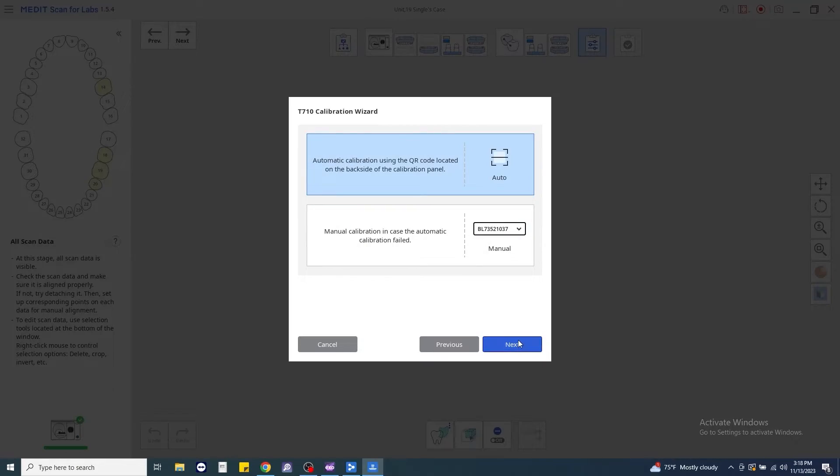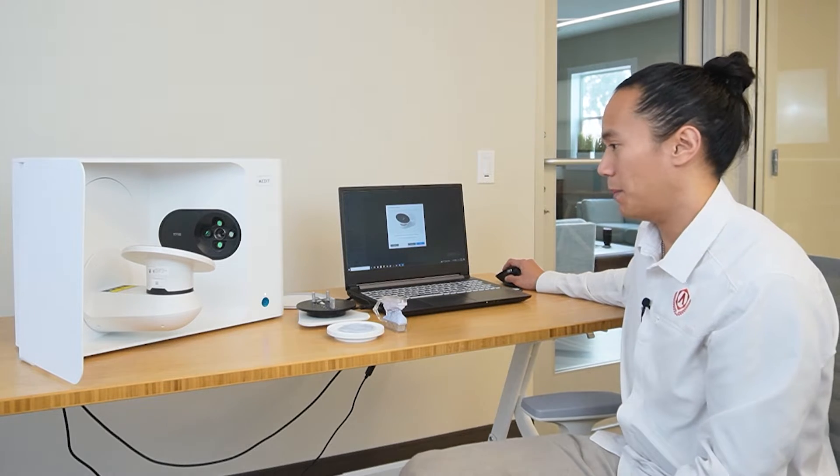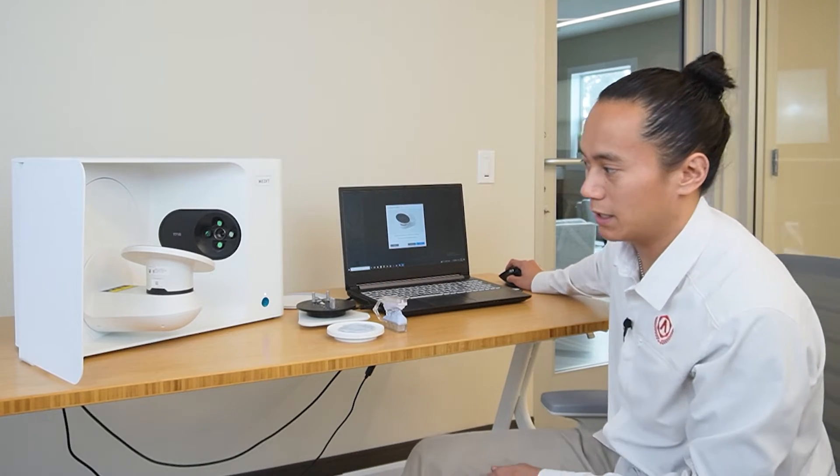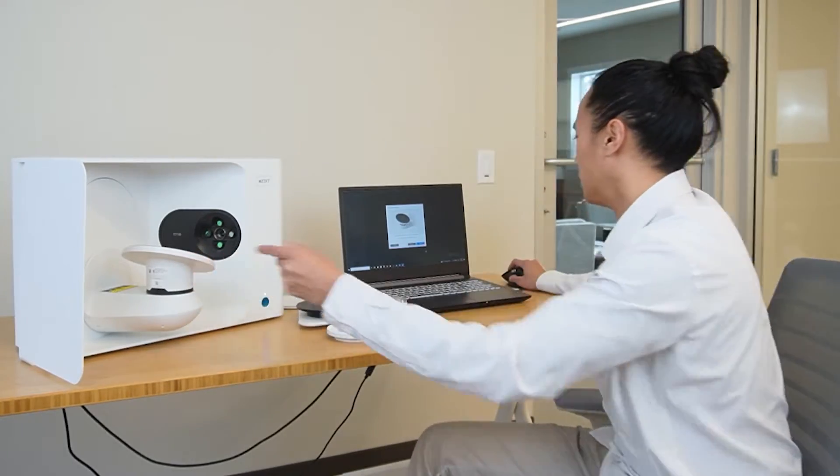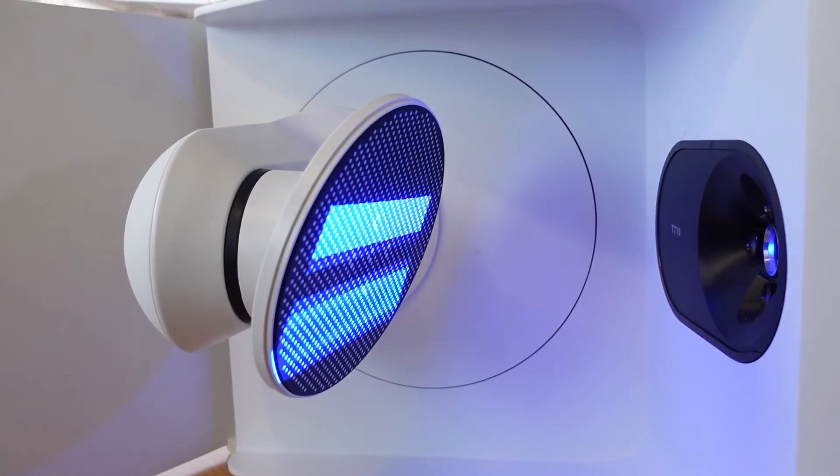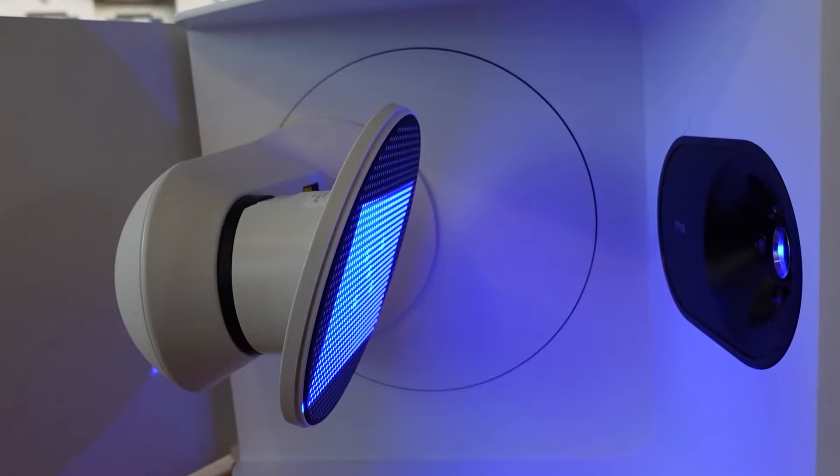You can manually level your calibration, have the projector read the QR code on the back of the scan stage, or you can have the software automatically do it for you. So we're going to select Automatic Calibration. Click Next. Make sure that the calibration plate is centered and stable, and we'll click Next here. This process should take just a few minutes.